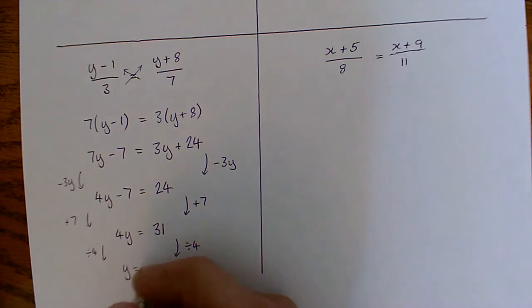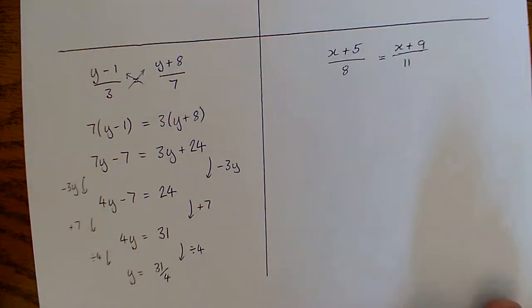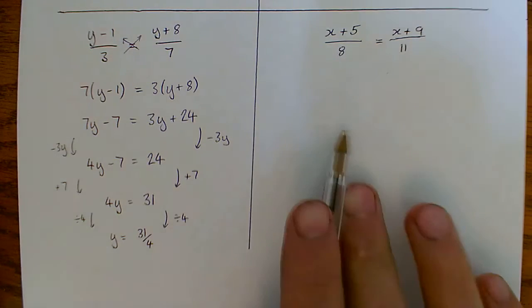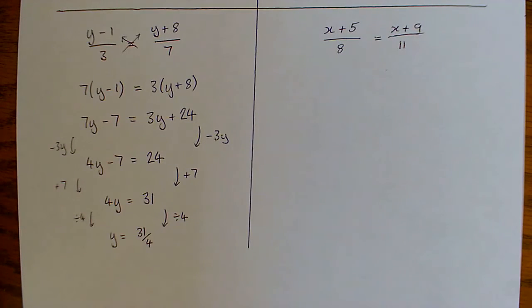And again, don't be afraid that it's a fraction. That's fine. 31 over 4 is a perfectly acceptable answer in a solving equations question. Have a go at your turn. I'll run through the answer in a few seconds.